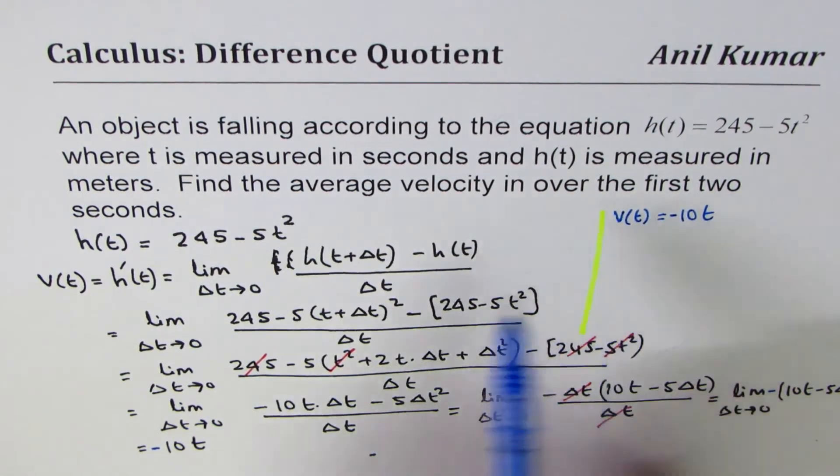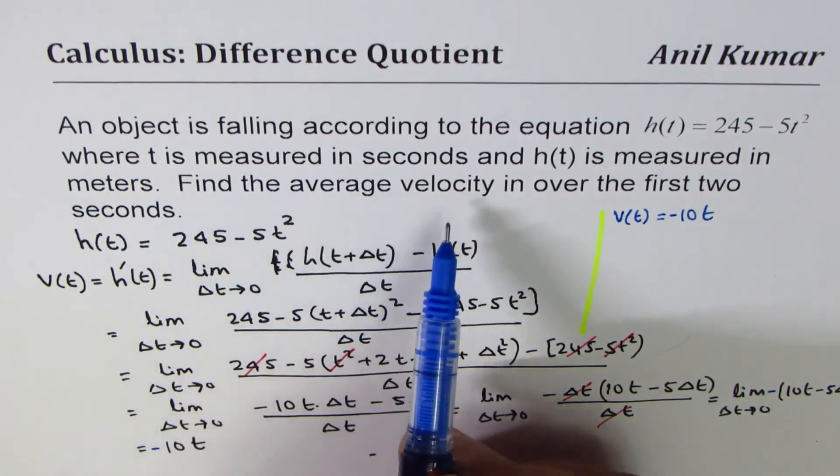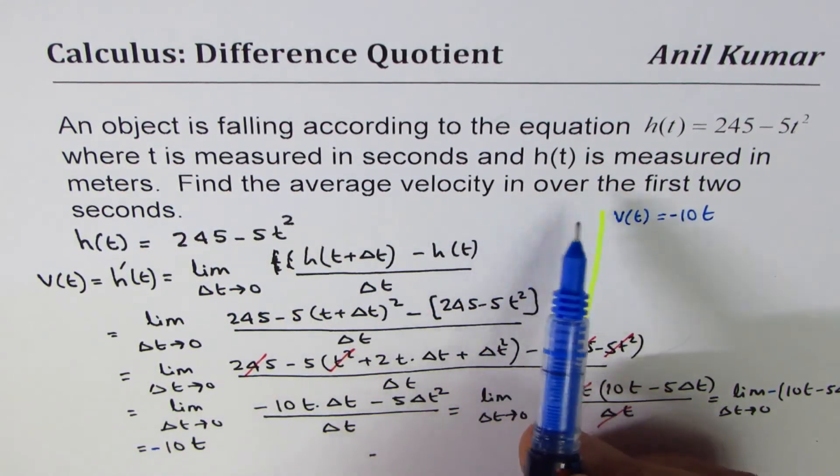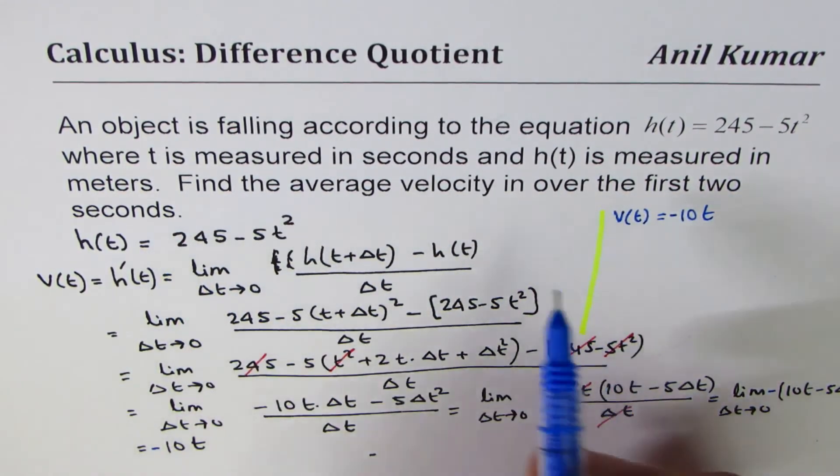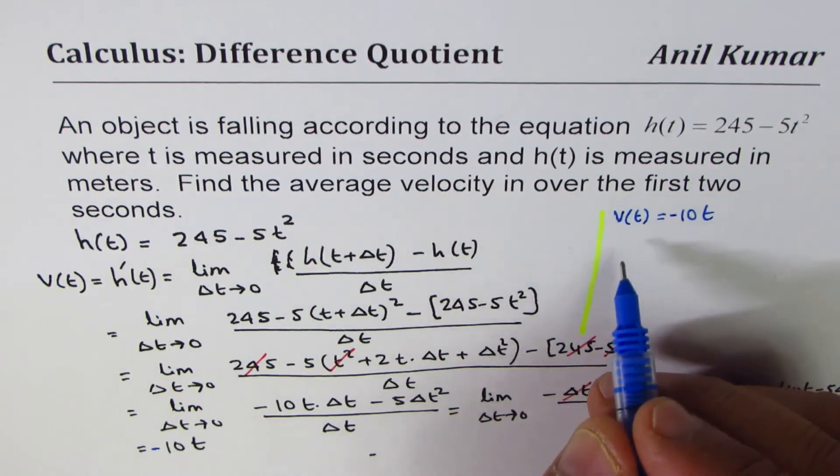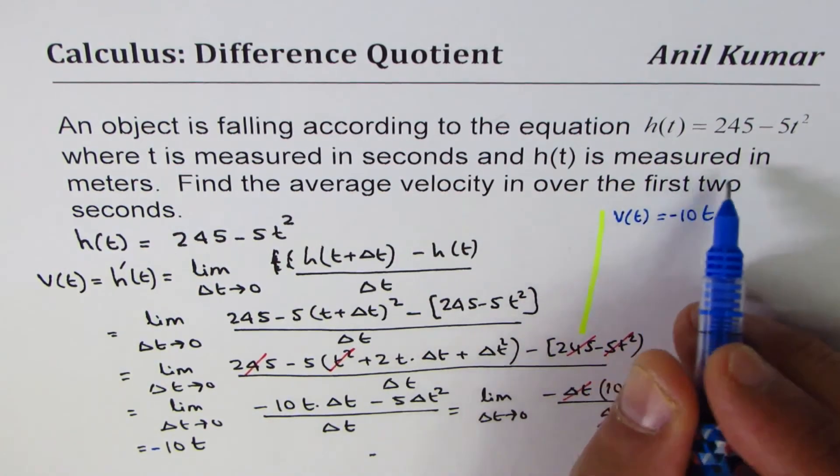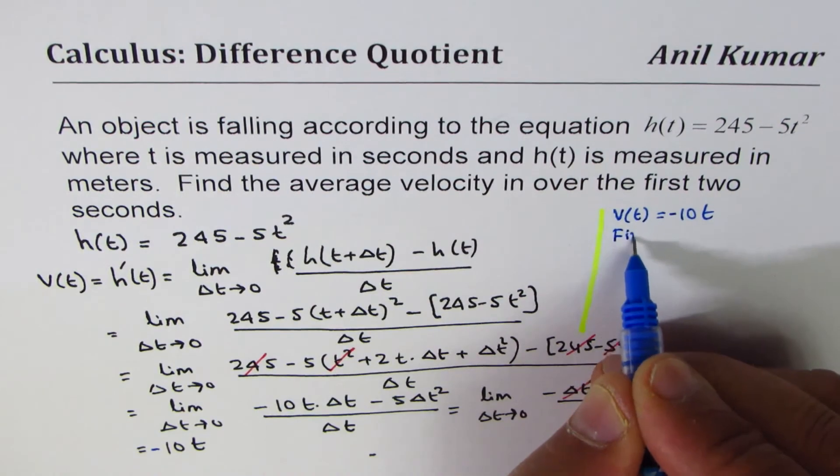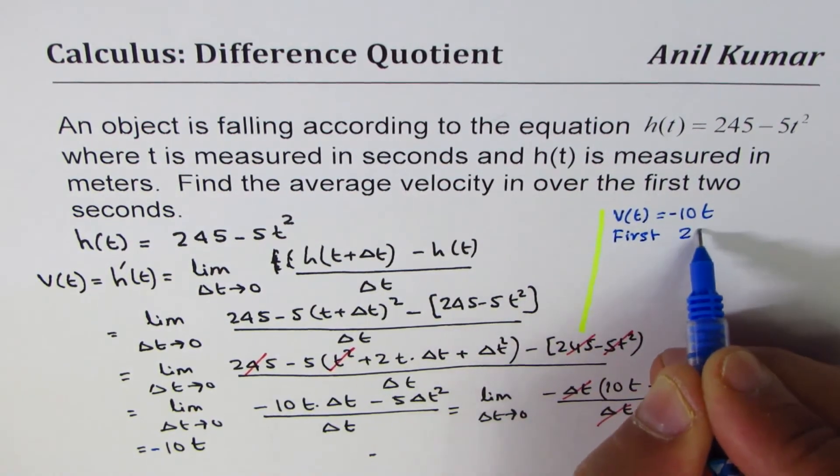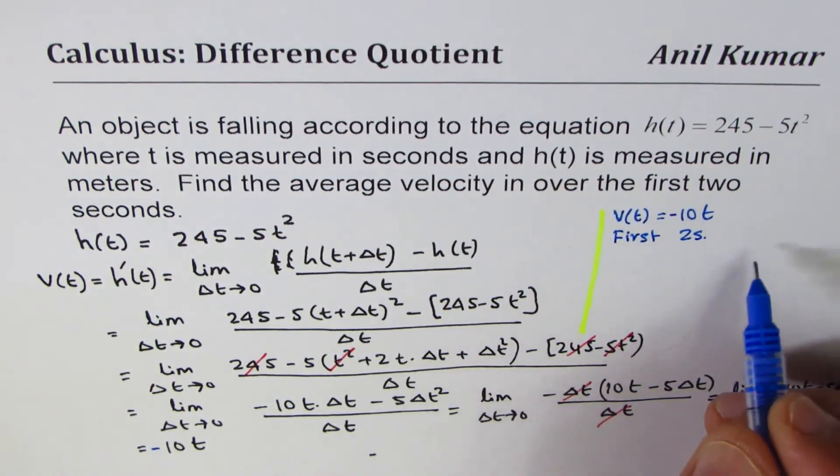Okay. Now, the question is to find average velocity over the first 2 seconds. Now, that average velocity will be what? So in first 2 seconds, let's write first 2 seconds. That means from 0 to 2.